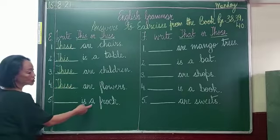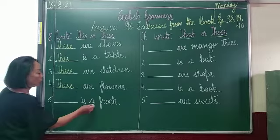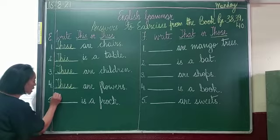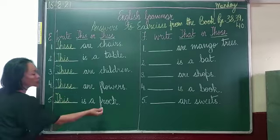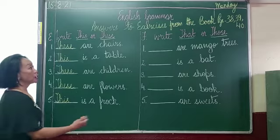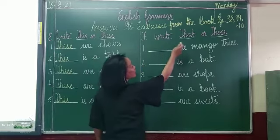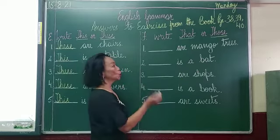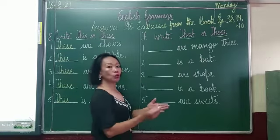Number five: 'dash is a frock' — a frock is a dress which girls wear; a frock means one, so 'this', capital T-H-I-S: this is a frock. Now the next exercise, F: write 'that' or 'those'. Again, 'that' for one and 'those' for many, and both 'that' and 'those' are for something far.